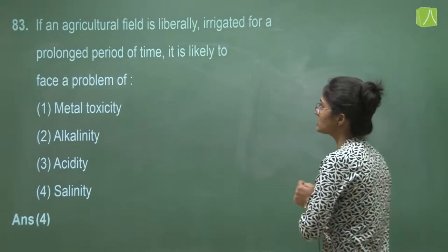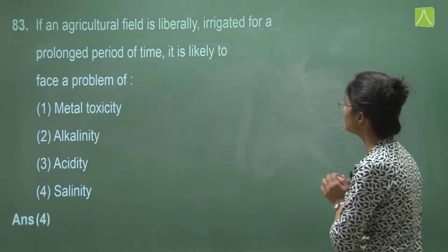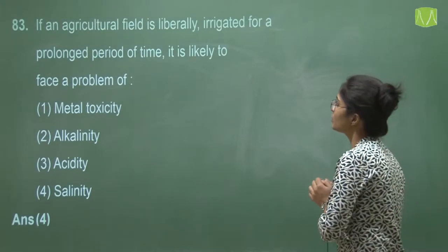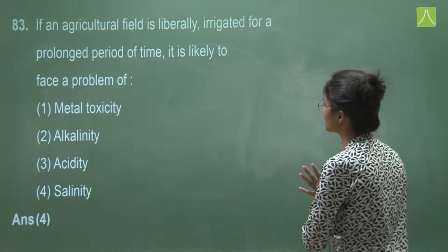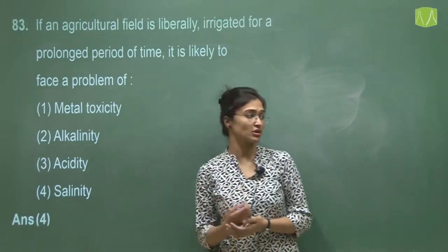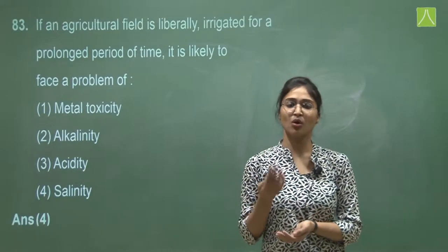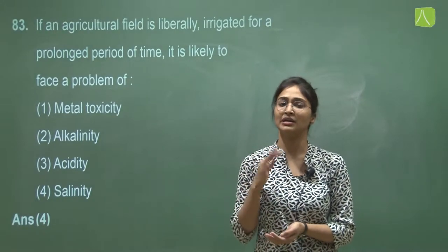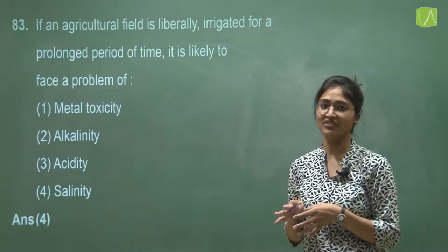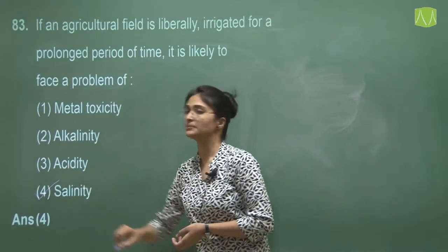Question 83 asks if an agricultural field is liberally irrigated for a prolonged period of time, what problem it is likely to face. When excess water evaporates or drains into underground water, the salts are left behind, causing salinity. So the correct answer is salinity.